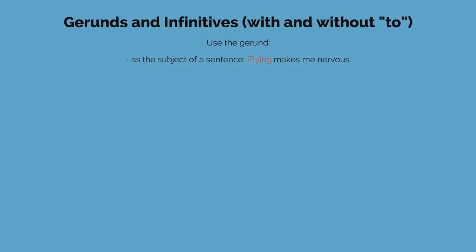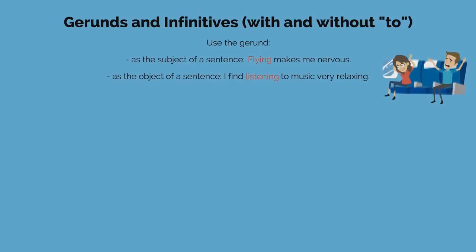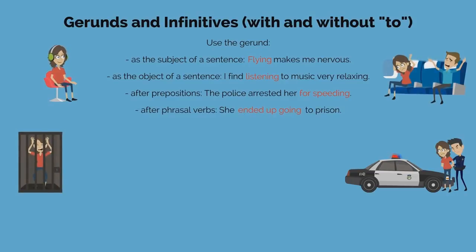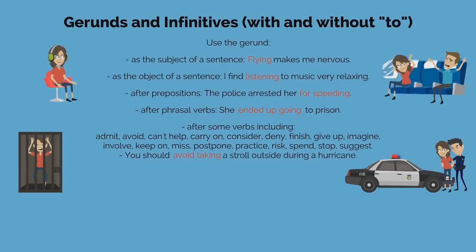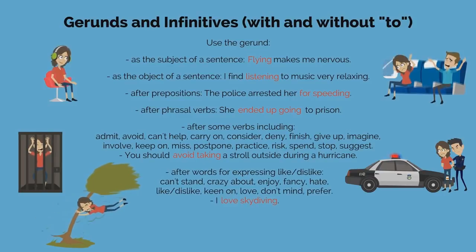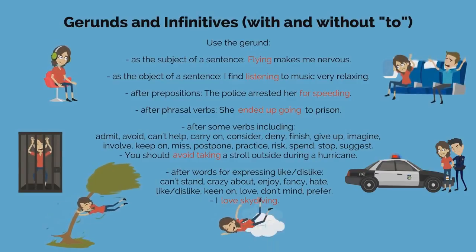Use the gerund as the subject of a sentence ('Flying makes me nervous'), as the object ('I find listening to music very relaxing'), after prepositions ('The police arrested her for speeding'), after phrasal verbs ('She ended up going to prison'), and after certain verbs such as: admit, avoid, can't help, carry on, consider, deny, finish, give up, imagine, involve, keep on, miss, postpone, practice, risk, spend, stop, suggest. For expressing likes and dislikes: can't stand, crazy about, enjoy, fancy, hate, like, dislike, keen on, love, don't mind, prefer. For example, 'I love skydiving.'